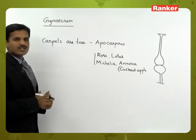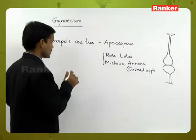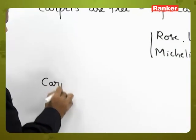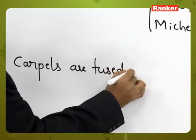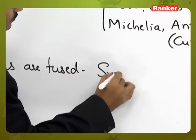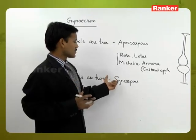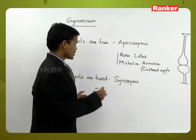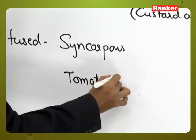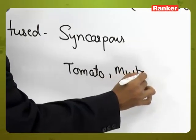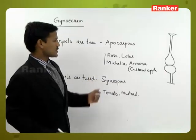In the Syncarpous condition, the carpels are fused. When the carpels are fused, this condition is called Syncarpous. Most flowers have this type of Gynoecium or ovary. Syncarpous condition is observed in tomato, mustard, and brinjal. In all these plants, Syncarpous condition is present.